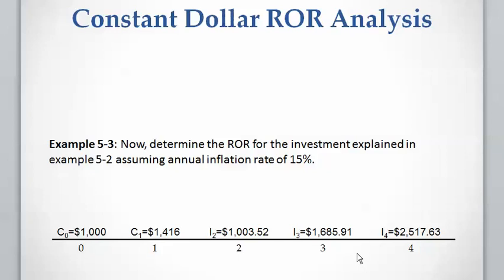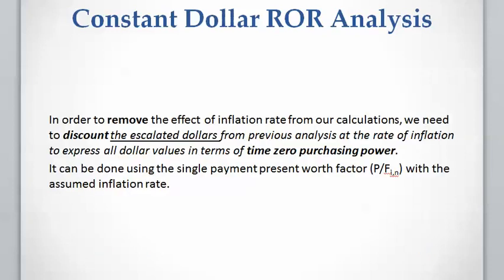Now let's consider an inflation rate of 15 percent and calculate the constant dollar cash flow, then calculate the rate of return for the constant dollar cash flow. To remove the effect of inflation from our escalated dollar cash flow, we need to discount each payment in the escalated dollar cash flow by the inflation rate, considering the discounting period. We multiply each payment by the single payment present worth factor P/F, using the inflation rate and the discounting period.